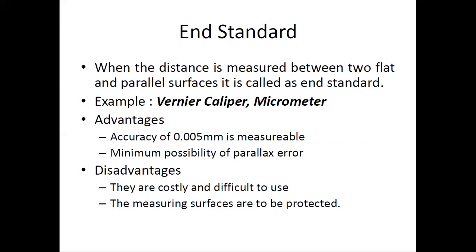Advantages of end standards such as vernier caliper and micrometer: accuracy of 0.005 mm is measurable, and there is minimum possibility of parallax error. Disadvantages: they are costly and difficult to use. However, as an engineer, we have hands-on experience with the vernier caliper — in your practicals we will see how to measure a particular object with the vernier caliper. But they are costly compared to line standard instruments.